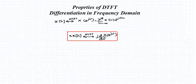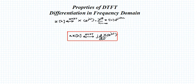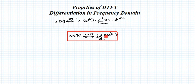We will discuss another important property: the differentiation property in the frequency domain for DTFT. Since the signal is in the discrete domain, differentiation is not defined in the time domain, so we apply this property in the frequency domain. If the Fourier transform of x(n) is X(e^jω), then the DTFT of n·x(n) can be directly written as j·d/dω of X(e^jω), where we take the derivative of the Fourier transform and multiply by the constant j.